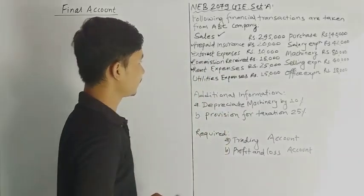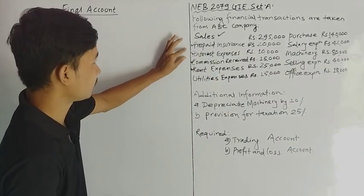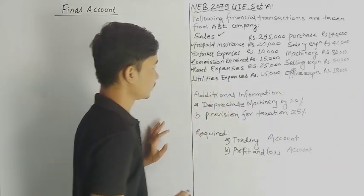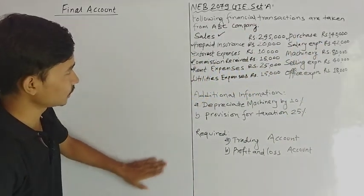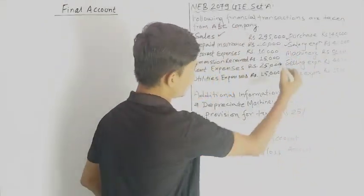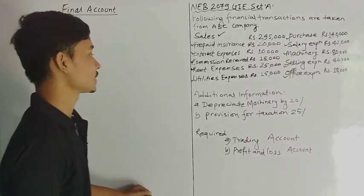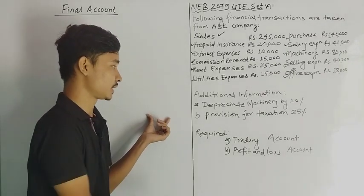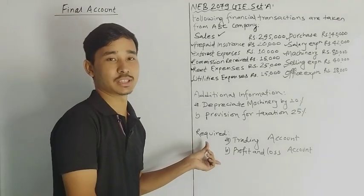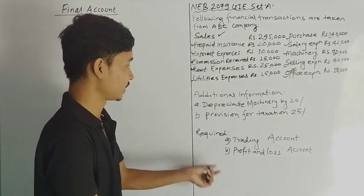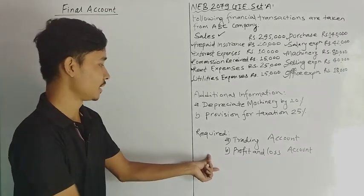Rent expenses go to profit and loss account — rents are office related. Commission is office-related income. Interest is office related. Utilities and expenses are office related, so they go to Profit and Loss Account. Purchases go to the trading account. Salary goes to Profit and Loss Account. Machinery, selling expenses go to Profit and Loss Account. Office expenses go to Profit and Loss Account.